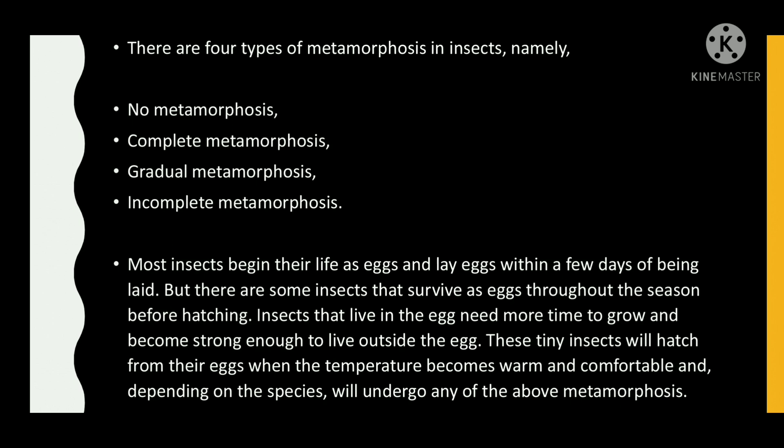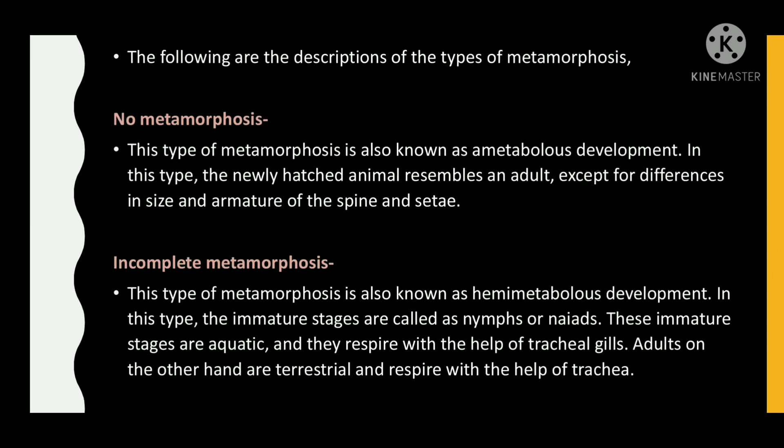There are four types of metamorphosis in insects: no metamorphosis, complete metamorphosis, gradual metamorphosis, and incomplete metamorphosis. Most insects begin their life as eggs, but some survive as eggs throughout the season before hatching. Insects that live in the egg need more time to grow and become strong enough to live outside. These tiny insects hatch when the temperature becomes warm and comfortable, and depending on the species, will undergo any of the four types of metamorphosis.